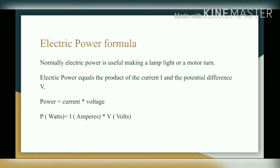The kilowatt is a commonly used unit where 1 kilowatt is equal to 1000 watts. Electric power is useful for making a lamp light or a motor turn. Electric power equals the product of the current I and the potential difference V. So, power P is equal to I into V, where the unit of power is Watt, unit of current is Ampere, and unit of voltage is Volt.